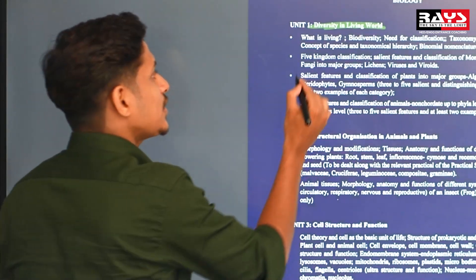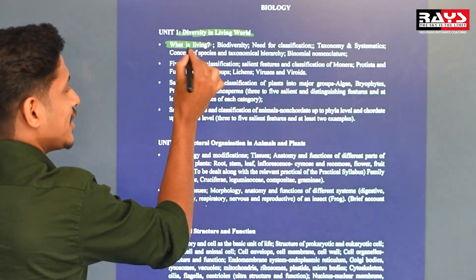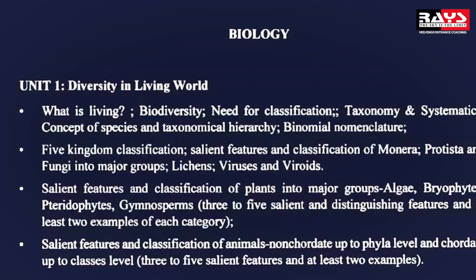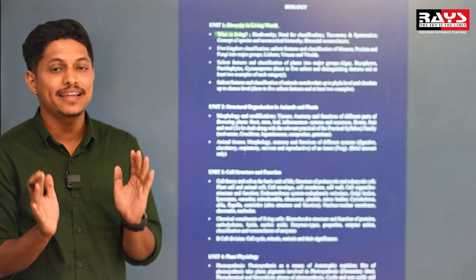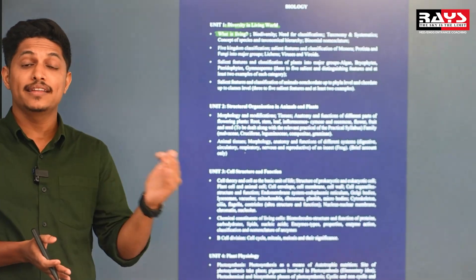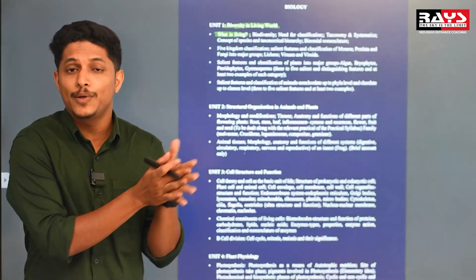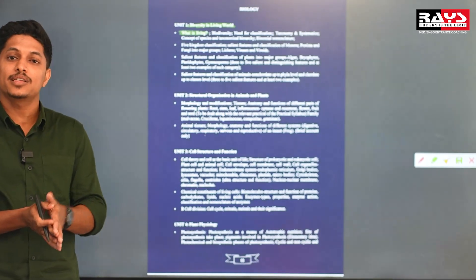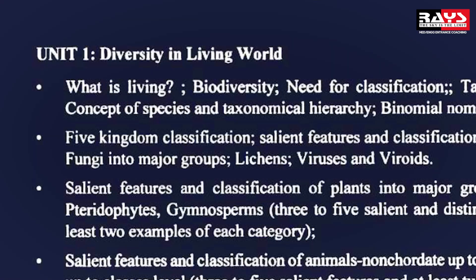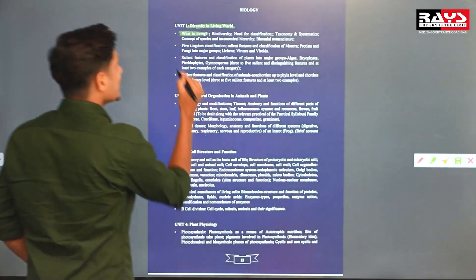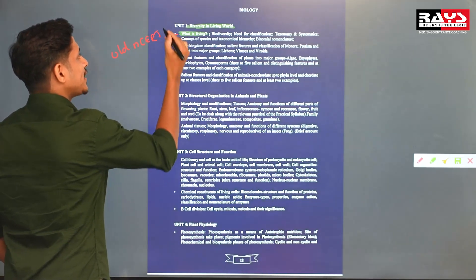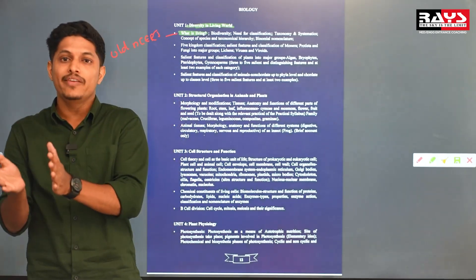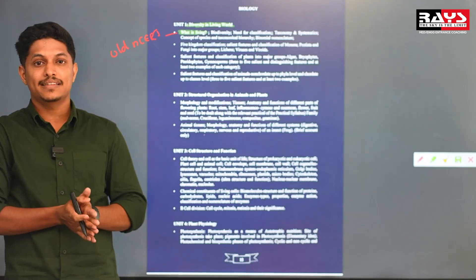The first topic is the living world. The very first topic is 'What is living?' This heading comes from NCERT. From the old NCERT, the topic 'What is living?' covers diversity in the living world and biodiversity — if there are 1.7 to 1.8 million species. We learn about living and non-living characters.